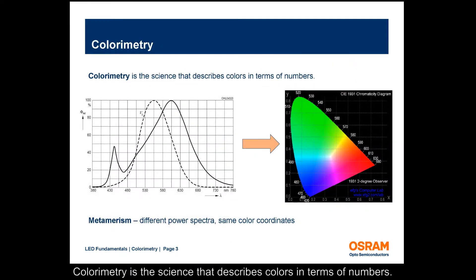Colorimetry is the science that describes colors in terms of numbers. In LED lighting, we generally start with the spectral power distribution of the light, scale to the response of the human eye, and calculate coordinates in color space. While working with color coordinates is convenient, information has been lost in the process.